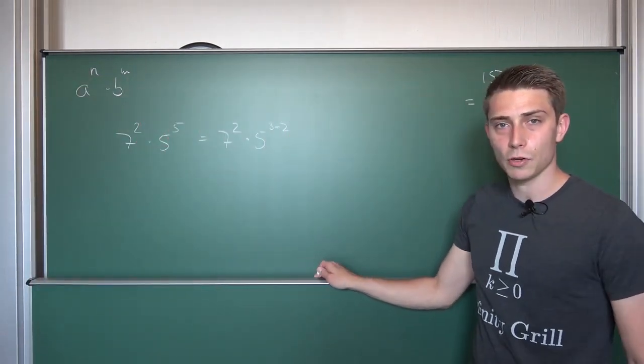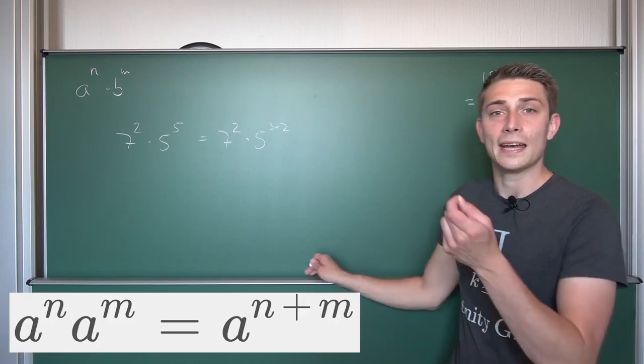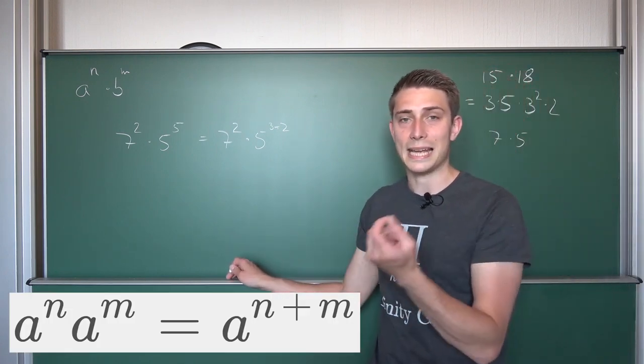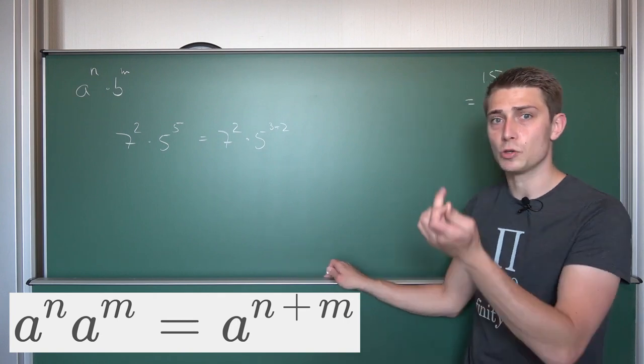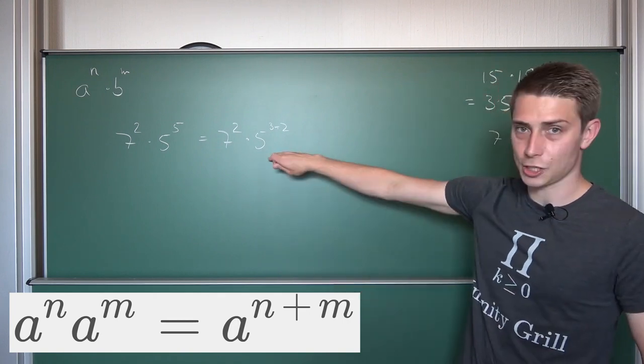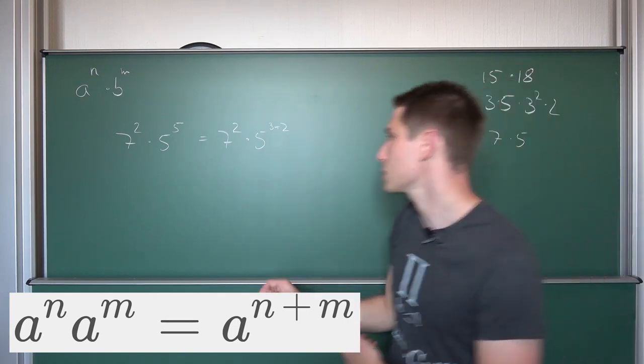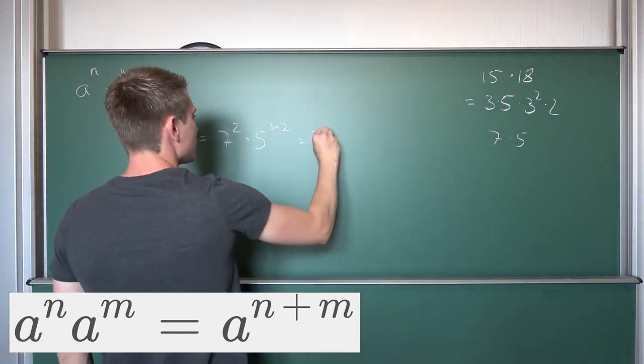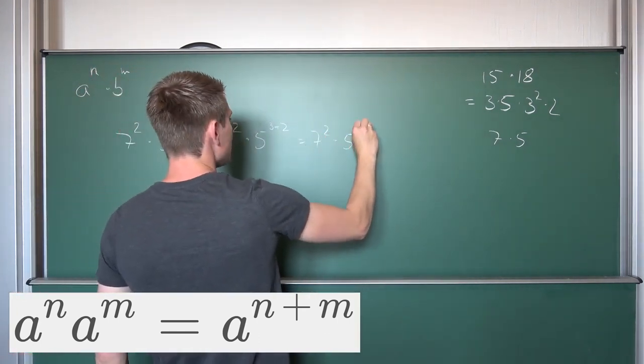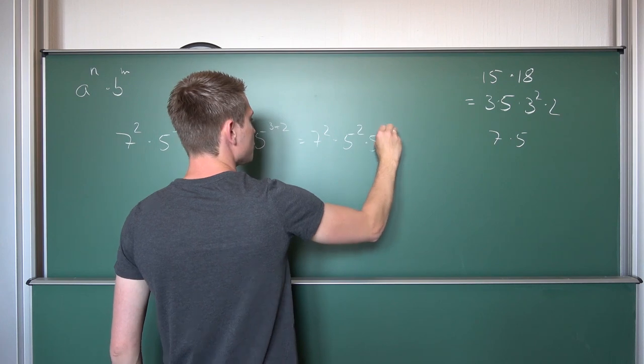And now we are going to make use of the exponentiation rule where we had a to the nth power times a to the mth power is a to the n plus mth power. This is just this thing used backwards. So this is 7 squared times 5 squared times 5 to the 3rd power.